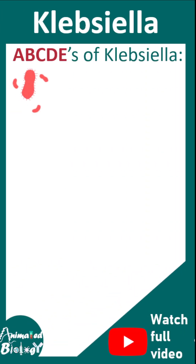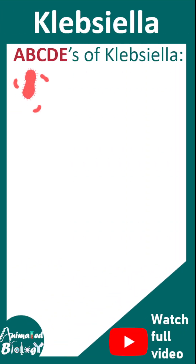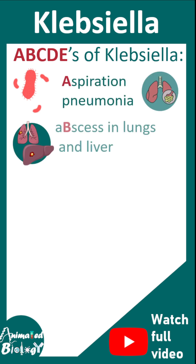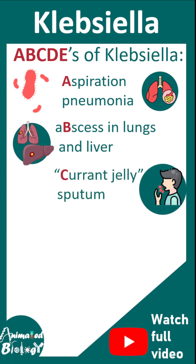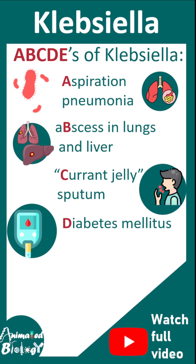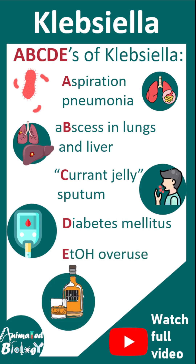This is the ABCD of Klebsiella, a mnemonic to help you remember: A for aspiration pneumonia, B for abscess in the liver and lungs, C for currant jelly sputum which is characteristic of this infection, D for diabetes mellitus, and E for ETOH overdose. Both diabetes mellitus and ETOH overdose are high risk factors for Klebsiella infection.